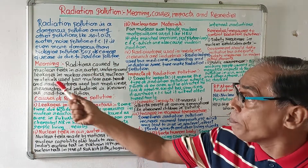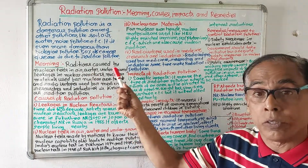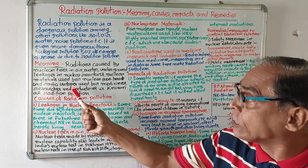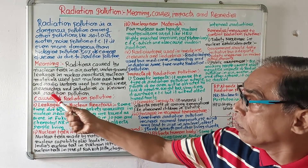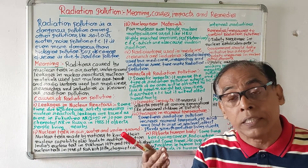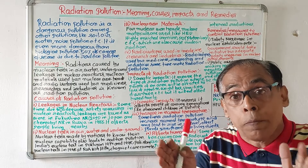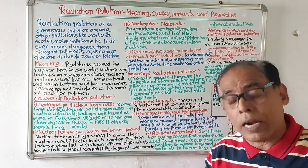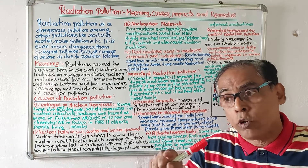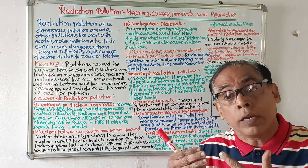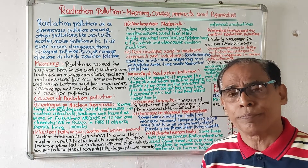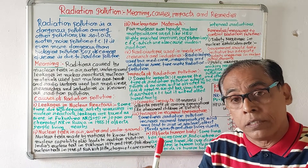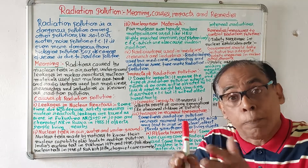Radiation pollution is caused by nuclear tests in air, water, and underground; leakages in nuclear reactors; nuclear materials used for nuclear warheads; and radioisotopes used for medicines, research, and industries. This is known as radiation pollution.